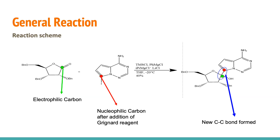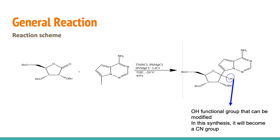This is the general reaction scheme for our step of the synthesis. On the left you can see our reactants and on the right is our product. In this step, a new carbon-carbon bond is formed. The two carbons involved in the formation of the bond are highlighted in green and red in the starting materials and the products, so you can see where the carbons end up. Note that the carbon in red will only be nucleophilic after the addition of the Grignard reagent. The reaction is also responsible for the creation of the important hydroxy functional group, which can be modified in later reactions.